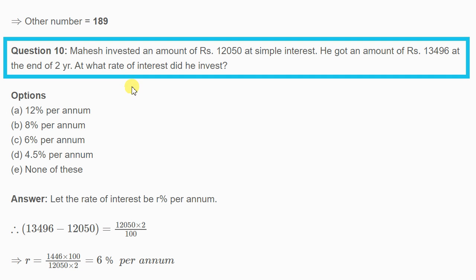Next question: Mahesh invested an amount of rupees 12,050 at simple interest. He got an amount of rupees 13,496 at the end of two years. This is the simple interest formula: principal times rate times time divided by 100 equals amount. The principle is 12,050 rupees, time is 2 years.